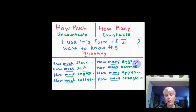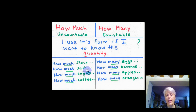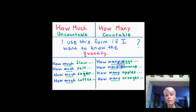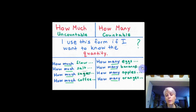'Are' goes before 'there' because this is the question form. How many eggs are there? How many bananas are there? How many apples are there? How many oranges are there? Compare: there are some eggs, there are some bananas — but in the question form, 'are' comes before 'there': how many bananas are there?